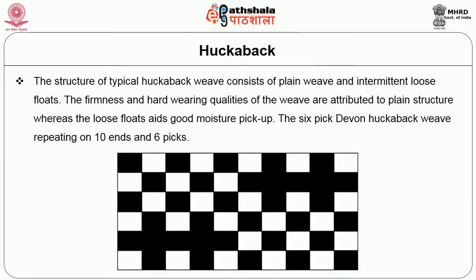The Huckaback weave consists of plain weave and intermittent loose floats. The firmness and hard-wearing qualities are attributed to the plain structure, whereas the loose floats aid good moisture pick-up. The 6-pick Davenham Huckaback weave repeating on 10 ends and 6 picks is illustrated in figure 3.1. In this structure, the first 5 ends work in a different order and the second 5 ends repeat in a different style — giving floats at the bottom with plain ends at the top, providing both structural rigidity and floats to absorb moisture.